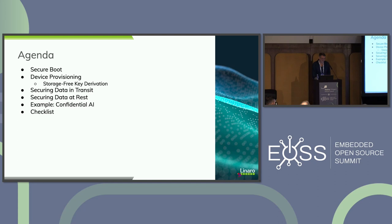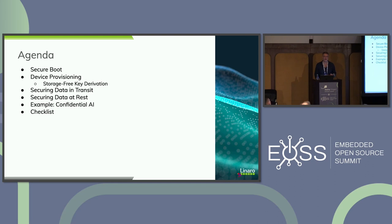In terms of agenda, these are just high-level things, but we're going to look at secure boot, device provisioning, and specifically a bit of a sidetrack on key derivation, which is one of the more important parts of the provisioning process. How do you secure data in transit? How do you secure data at rest? We'll distinguish the difference between those two, then a quick example tying everything together — what an end-to-end boot to cloud security solution might look like, called Confidential AI — and then a quick checklist wrap-up.